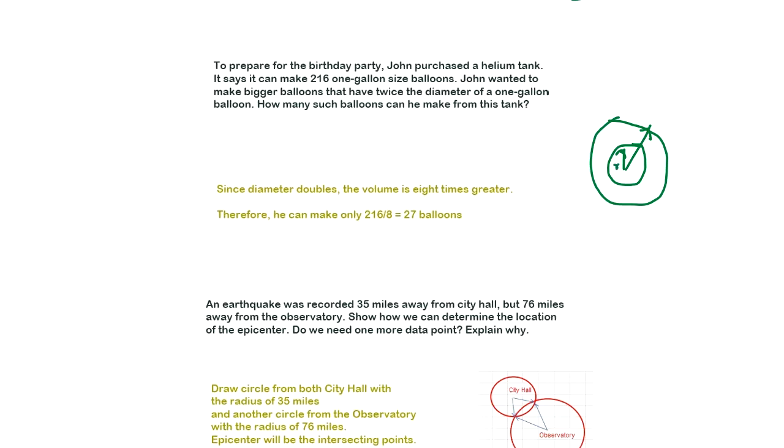When you make a twice as big radius, this R, 2R, then 2R cubed is a new volume for larger one. So it's eight times larger.